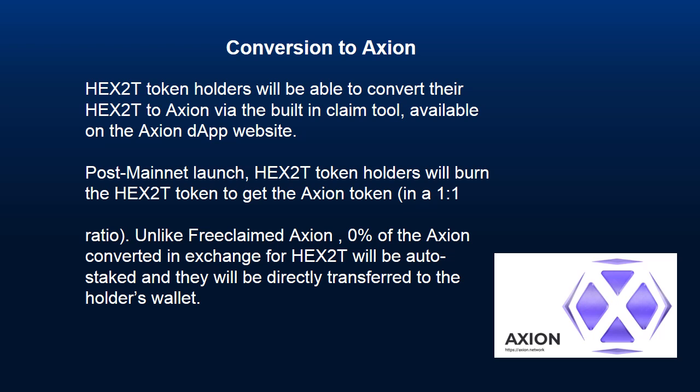Conversion to Axion. HEX 2T token holders will be able to convert their HEX 2T to Axion via the built-in claim tool, available on the Axion DApp website. Post mainnet launch, HEX 2T token holders will burn the HEX 2T token to get the Axion token in a 1-to-1 ratio. Unlike free claimed Axion, 0% of the Axion converted in exchange for HEX 2T will be auto-staked, and they will be directly transferred to the holder's wallet.